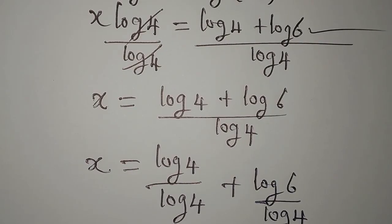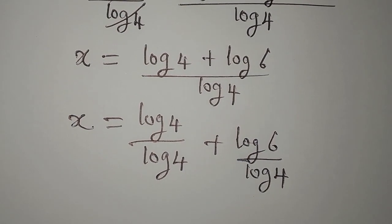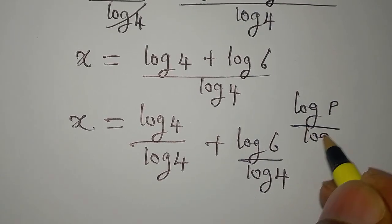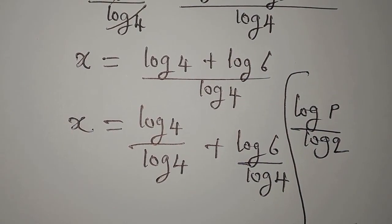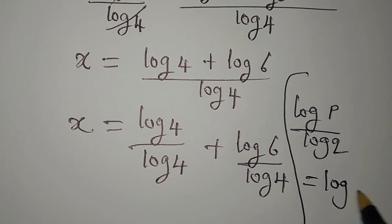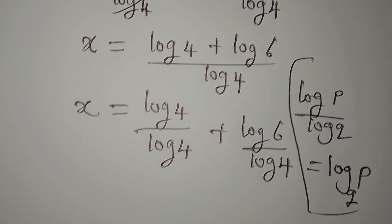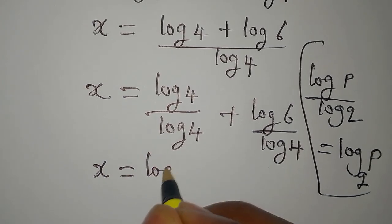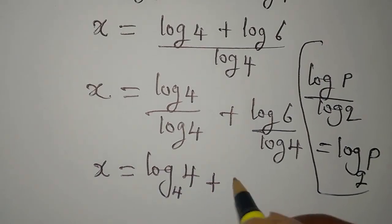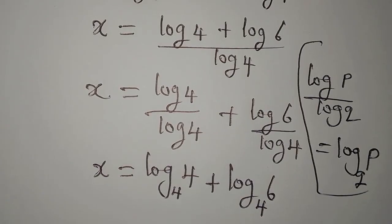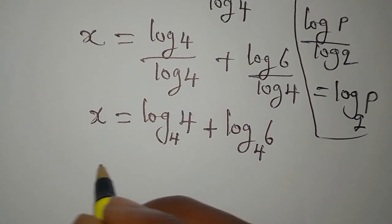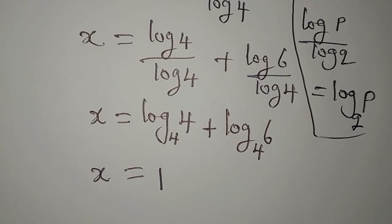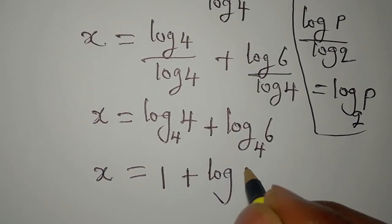We can split this to get x equal to log 4 over log 4 plus log 6 over log 4. Now we can change the base — remember that log P over log Q is the same as log P to base Q. So we can express this as x equals log 4 to base 4 plus log 6 to base 4. Since log of a number to the same base equals 1, log 4 to base 4 is 1.